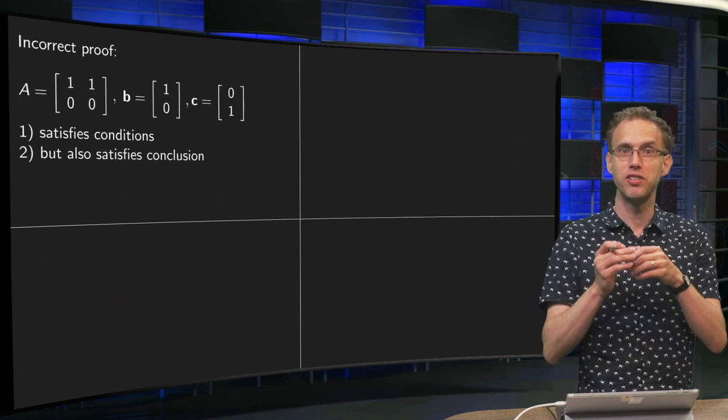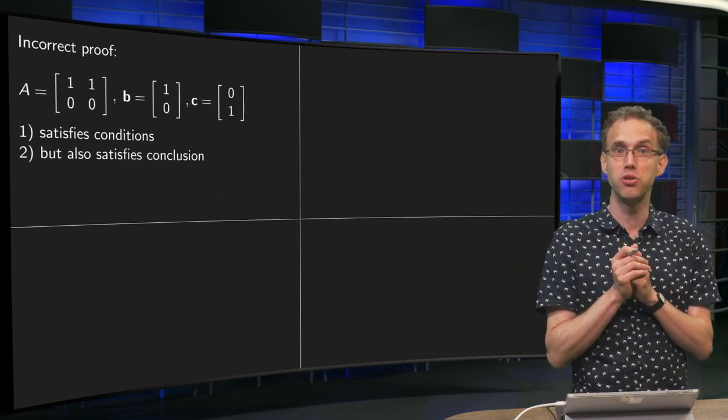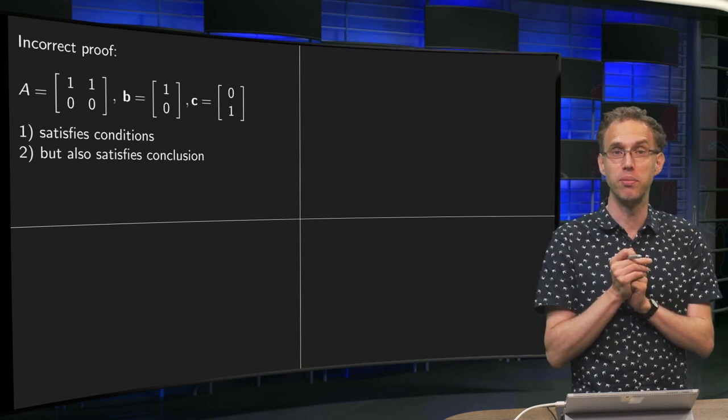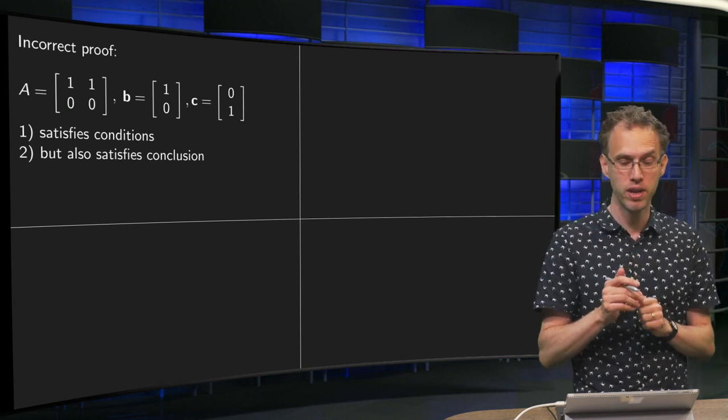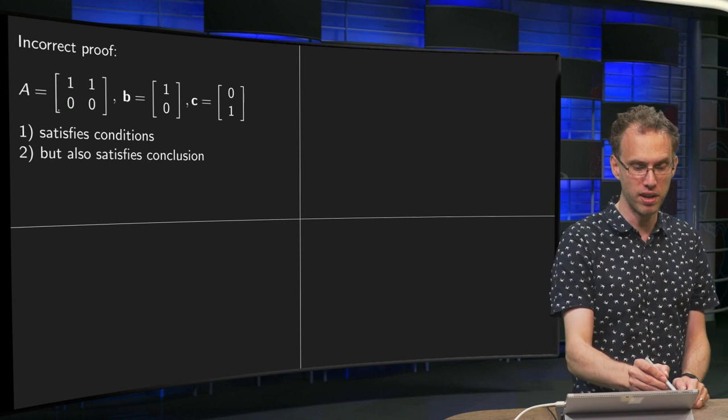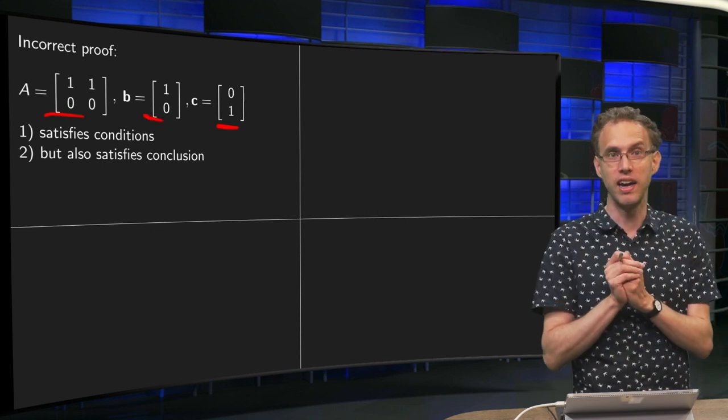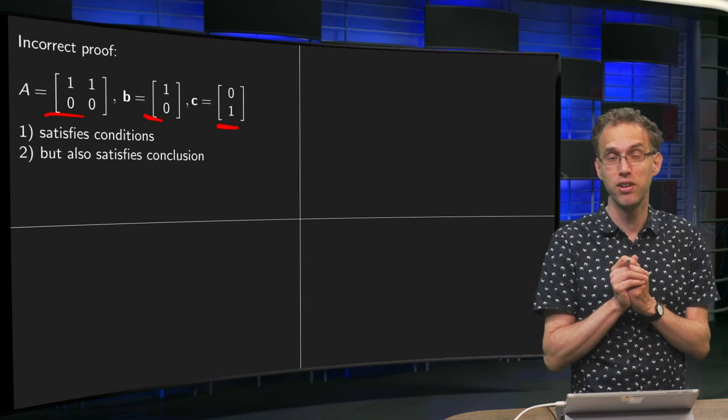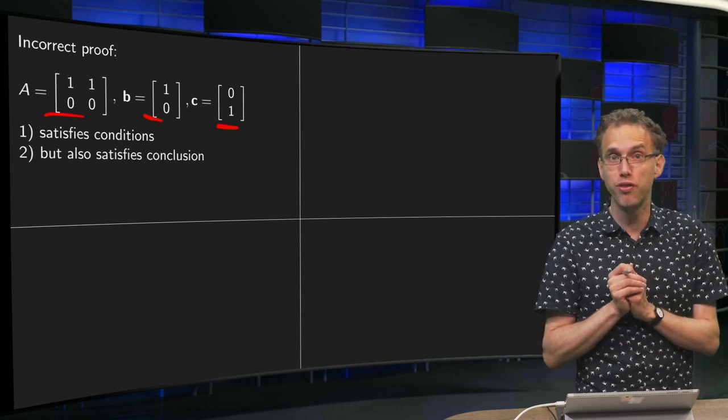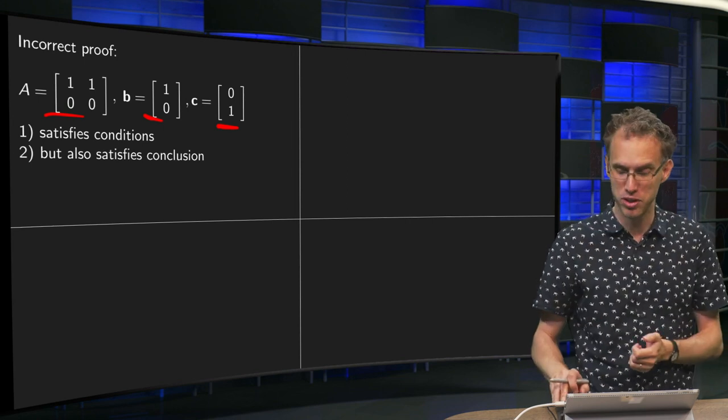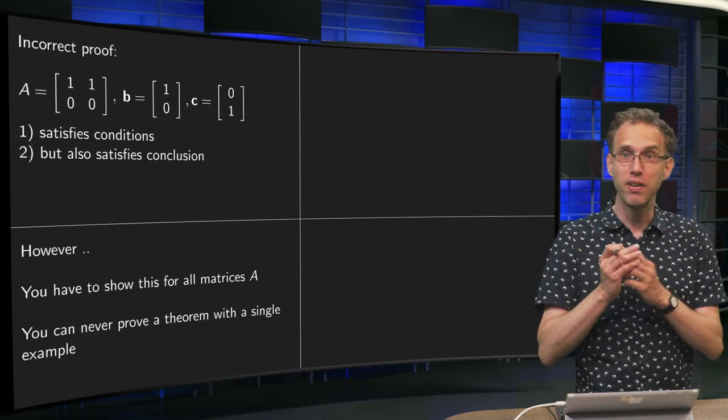Now, with the same matrix and the same B and C, students tried to prove that the theorem is true. So then they said, okay, we have an A and a B and a C. We satisfy the condition of the theorem. We satisfy the conclusion of the theorem. So the theorem is true.